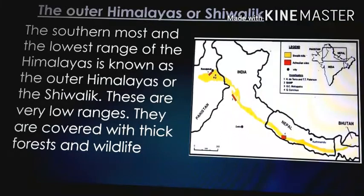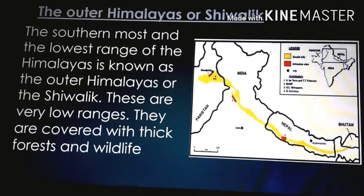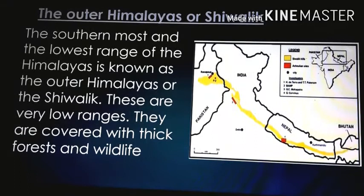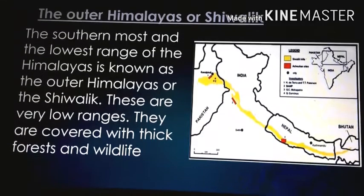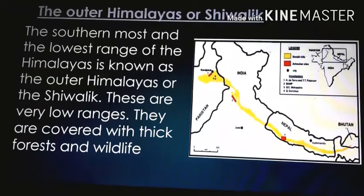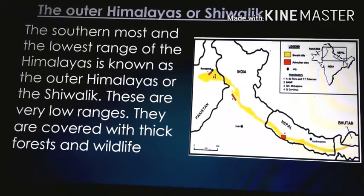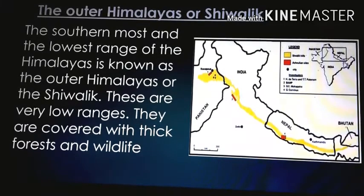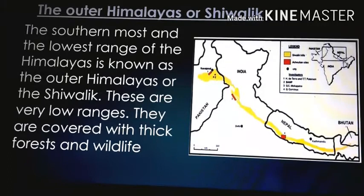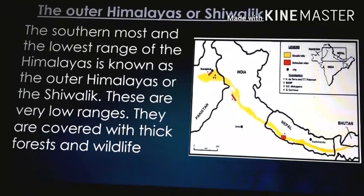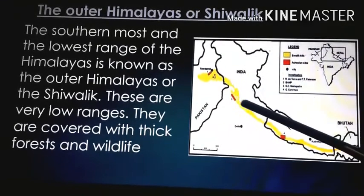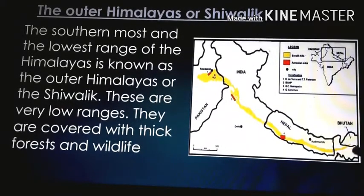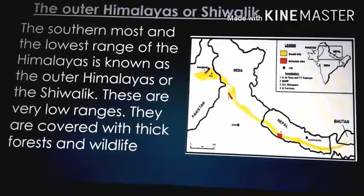The third range is the Outer Himalayas or Shivalik. It is the southernmost and lowest range of the Himalayas. These are very low ranges covered with thick forest and wildlife. On the map, the yellow color represents the Shivalik range.